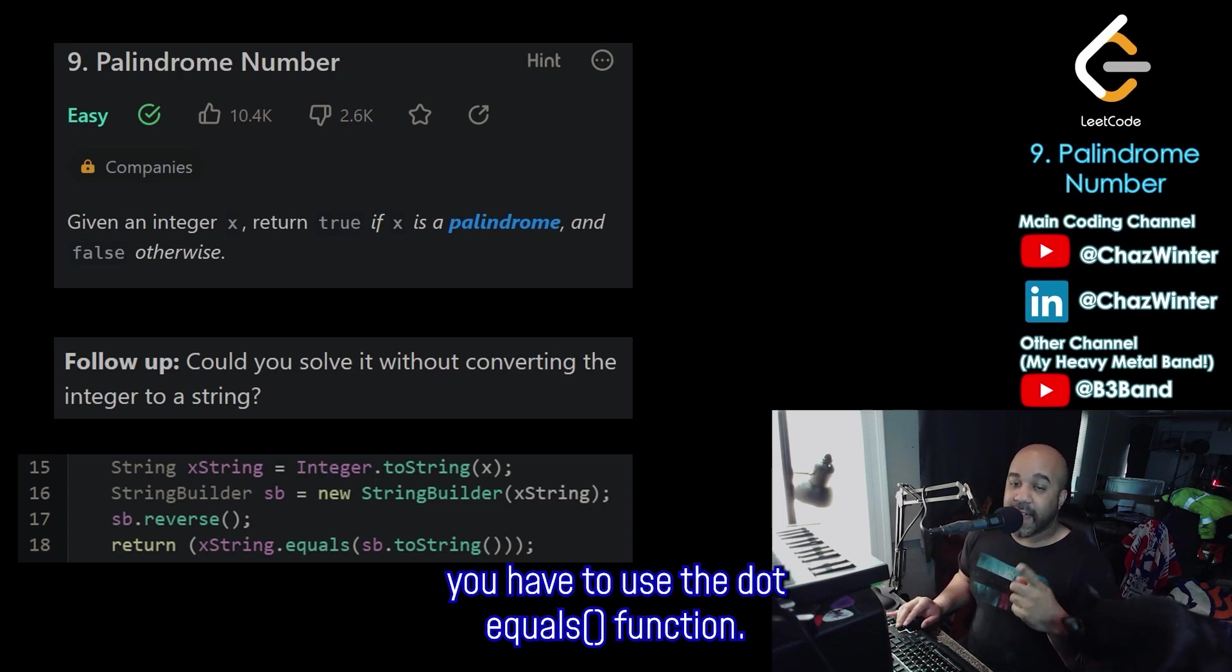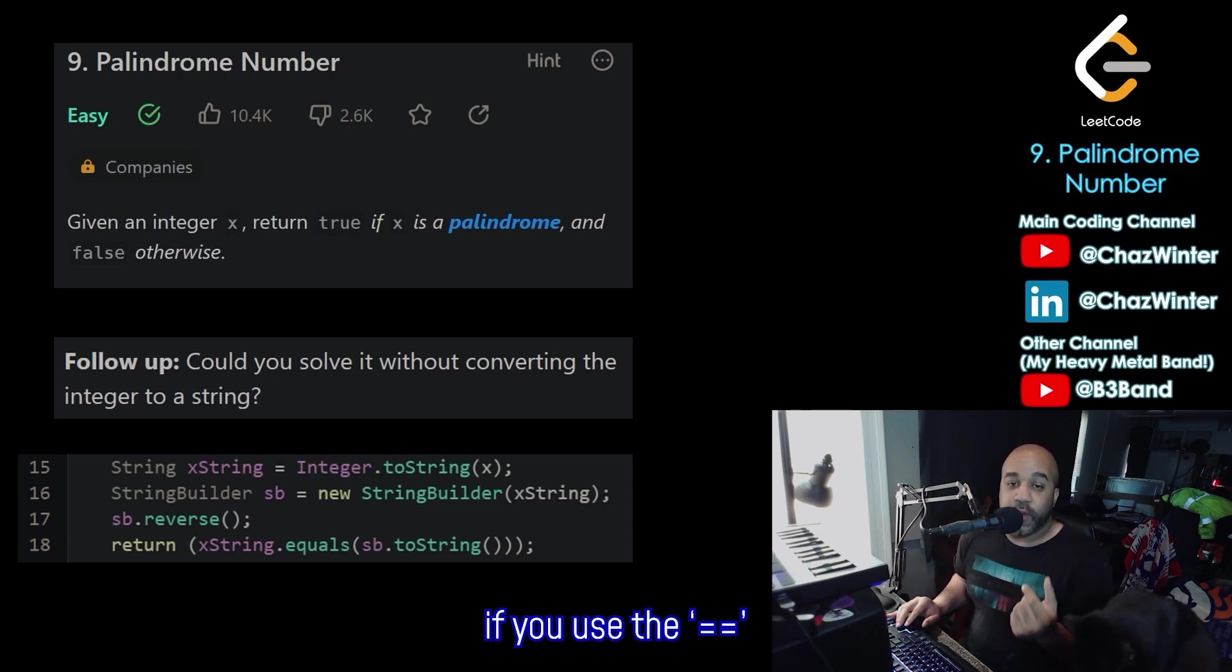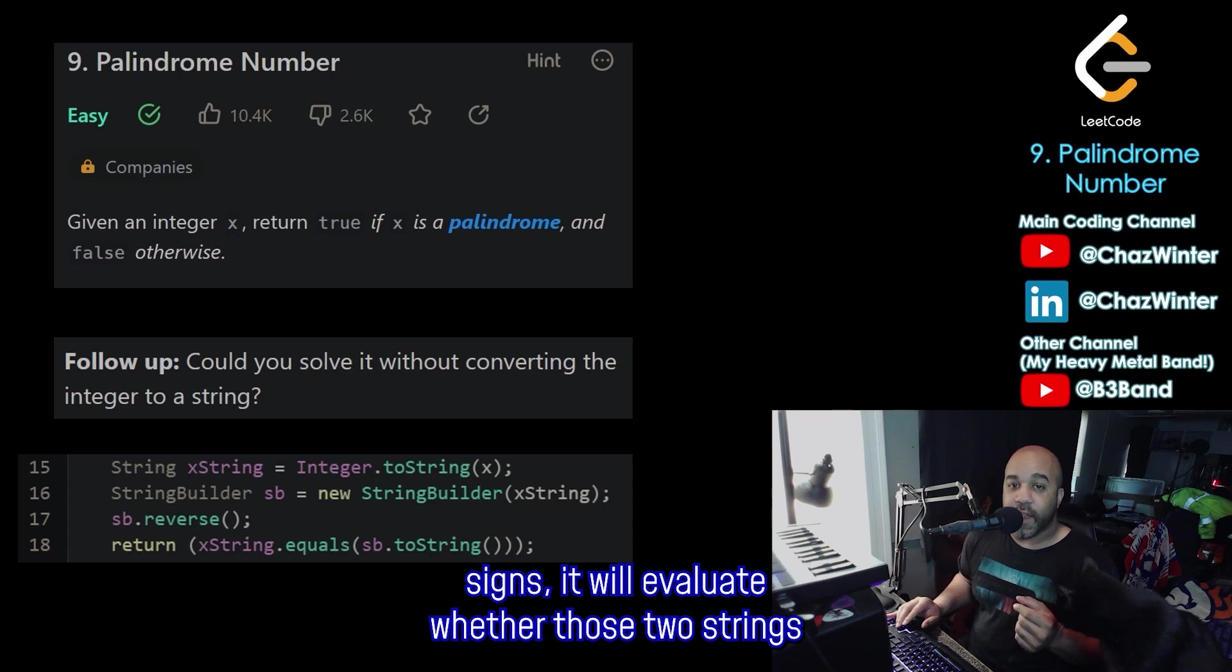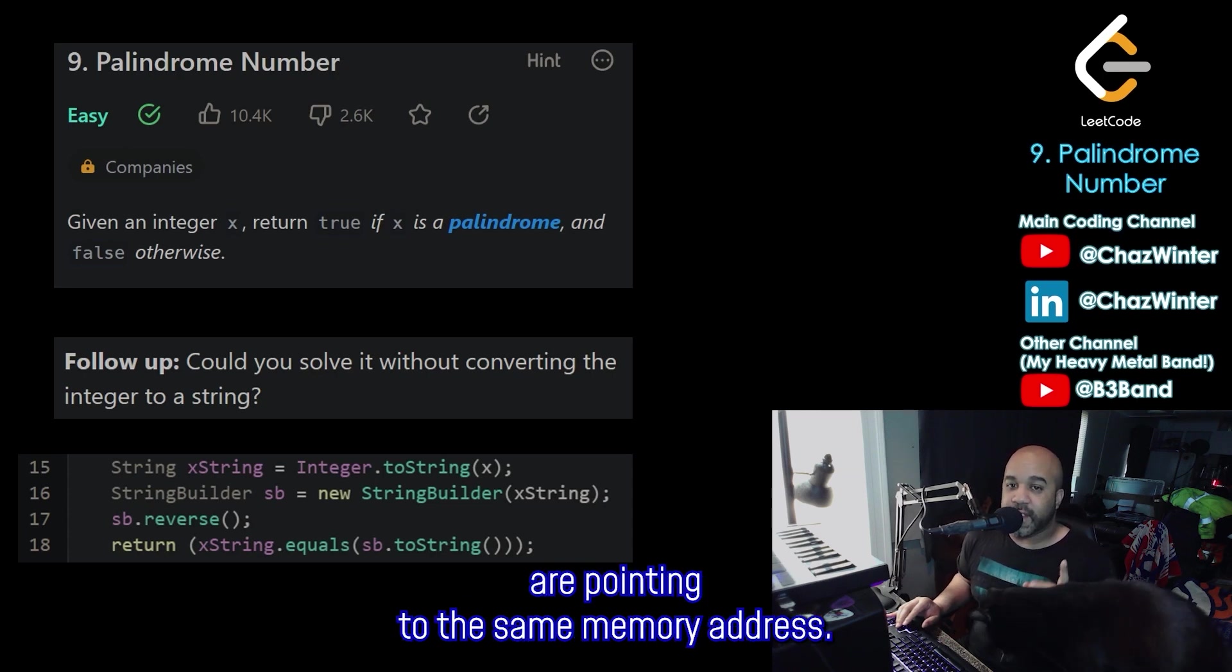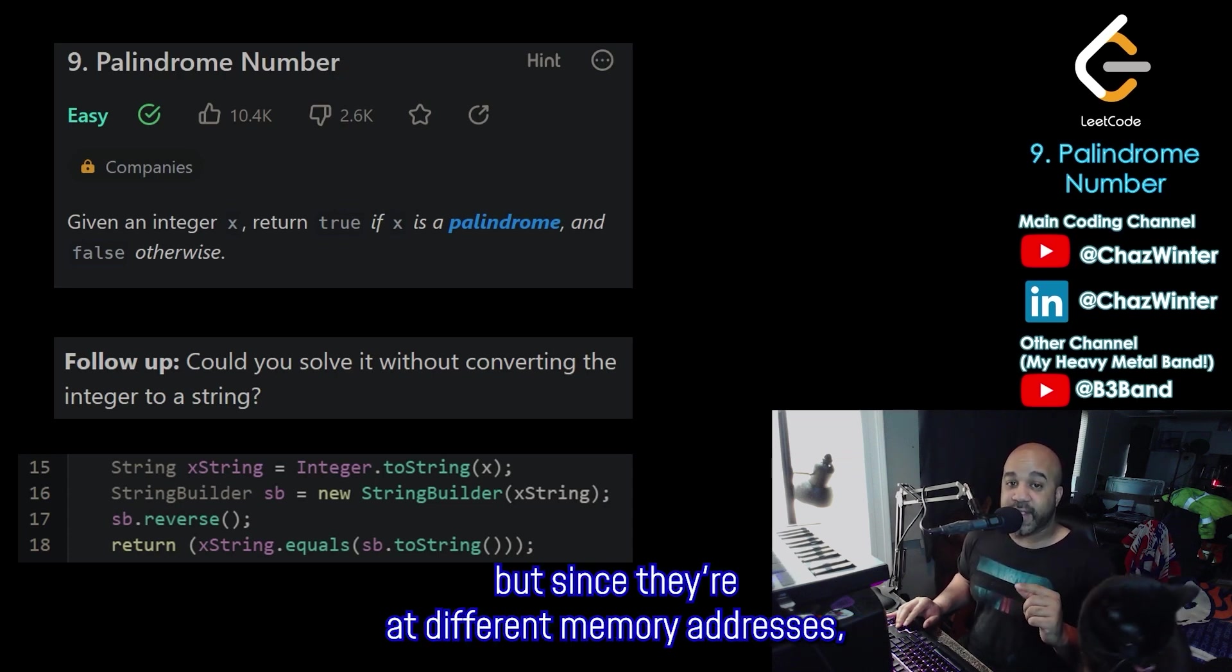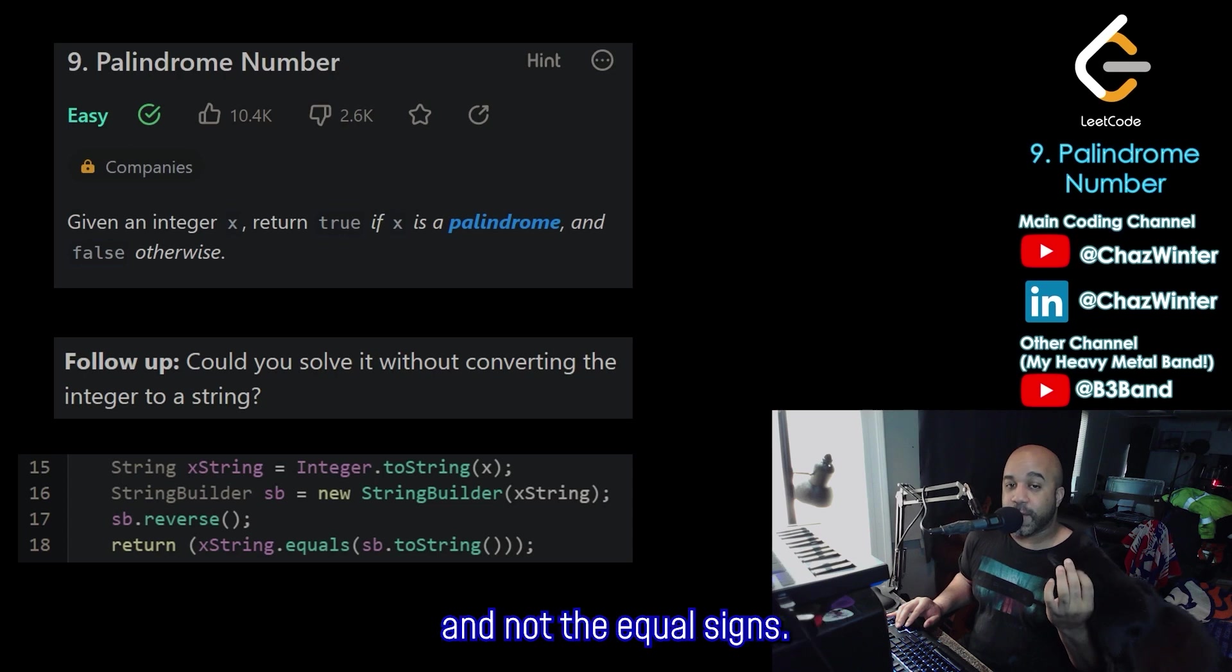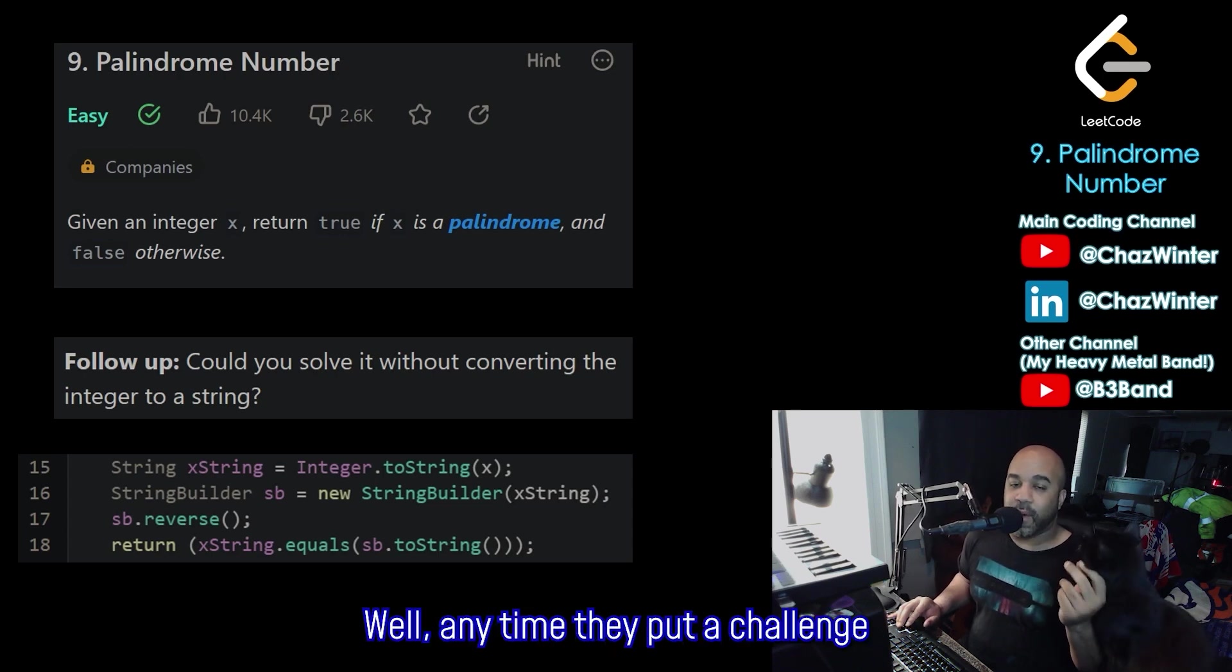It says xString.equals. And what does xString equal to? The string builder when converted to a string, sb.toString. And of course, with strings, you have to use the .equals function. You can't just use the double equal signs because with strings, if you use the double equal signs, it will evaluate whether those two strings are pointing to the same memory address. So you can have two strings that contain the exact same letters, but since they're at different memory addresses, it'll consider them to not be equal to each other. So that's why I use .equals and not the double equal signs.